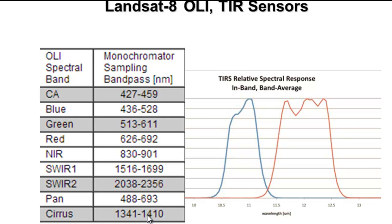Landsat 8 also has a Thermal Infrared Sensor with two bands in the thermal spectral region, ranging from 10 to 13 microns — band 10 and band 11. Since we have two thermal channels, we can use a technique called the split window technique to estimate sea surface temperature or land surface temperature.